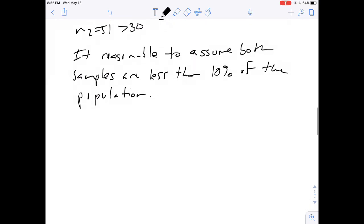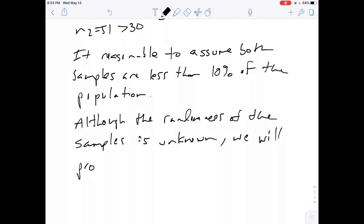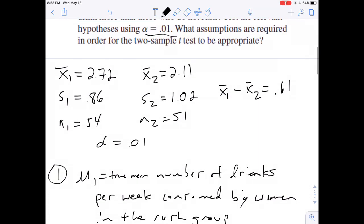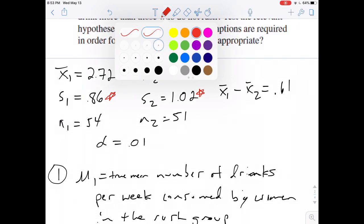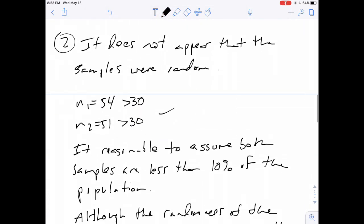So basically two out of three conditions were met. So what I'm going to say is that although the randomness of the samples is unknown, we will proceed with a t-test for mu1 minus mu2. We know that it's a t-test because the sample standard deviations, these numbers here, did come from the sample, so those are s values and not sigma values. So we're using a t-test here instead of a z-test.